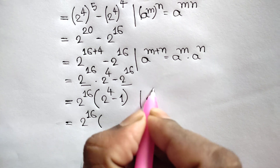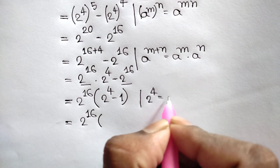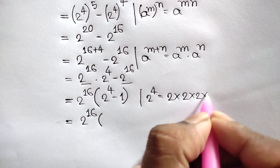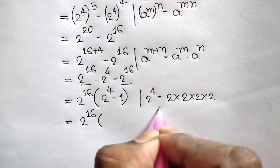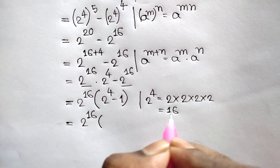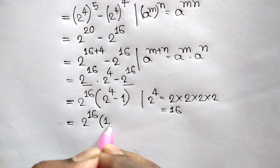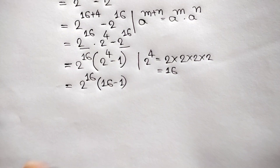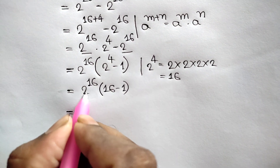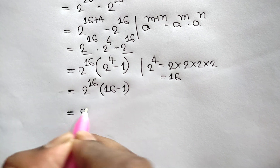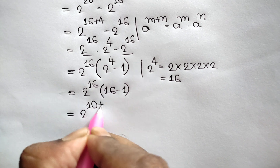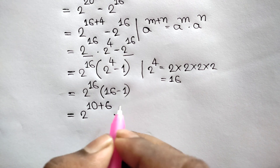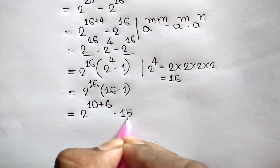We know 2 to the power 4 means 2 times 2 times 2 times 2, which equals 16. So we can write 16 minus 1, which is 15. This gives us 2 to the power 16 times 15.